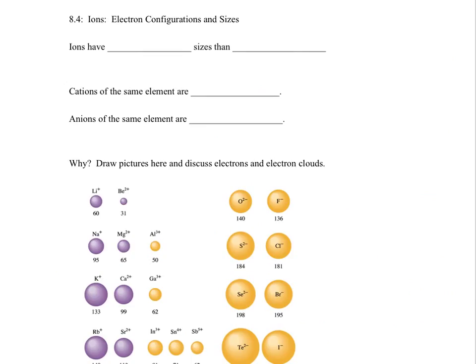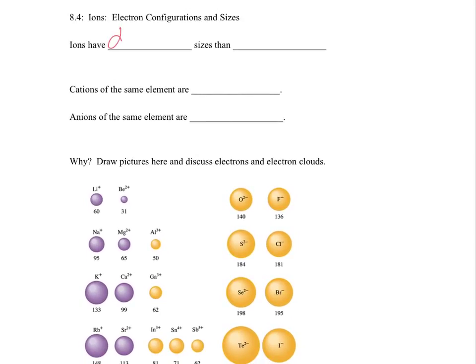I think something got cut out of your packet because in mine, I have the diagram with the radius, but I didn't have the 8.4 at the top. So you may have to write this off to the side. I want to talk a minute about electron configurations and sizes. Ions have different sizes than atoms. We know that. Why? Because ions have a different number of electrons. Positive ions have lost electrons. Negative ions have gained electrons.